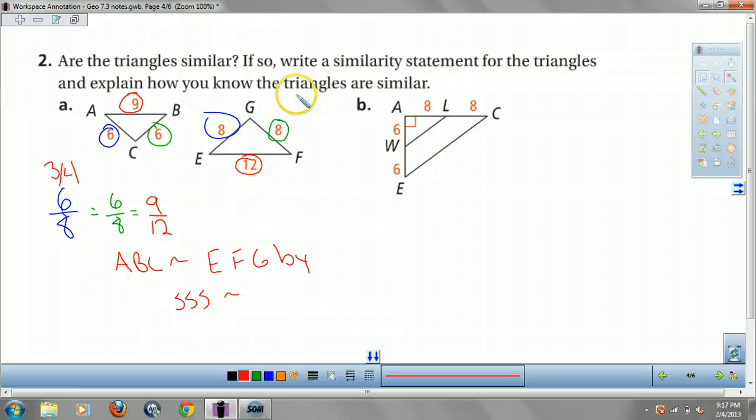Alright, let's do another one. I'm actually going to separate these triangles so we can see them. We have A, W, L and A, E, C. So, this would be a 90 still. A, C would be 8 plus 8, which is 16. A, E would be 6 plus 6, which is 12.